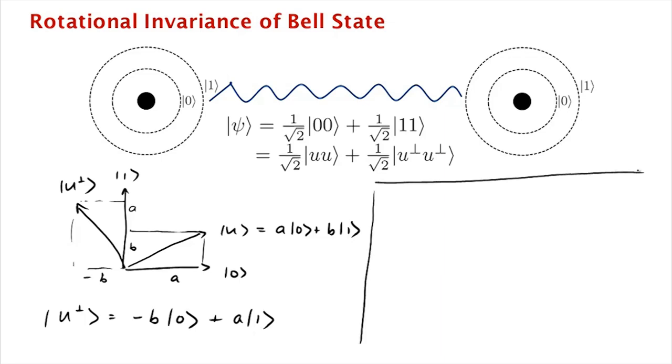And so let's write down what's 1 over square root 2 times uu plus u perp, u perp.